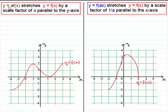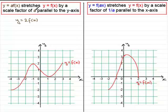Suppose we have this curve here, y equals f of x, or any curve for that matter. If we take y equals 2f of x, then the a here is the 2. What this is telling us is that the graph gets stretched parallel to the y-axis by a scale factor of a — in this case, 2. So what does that mean?